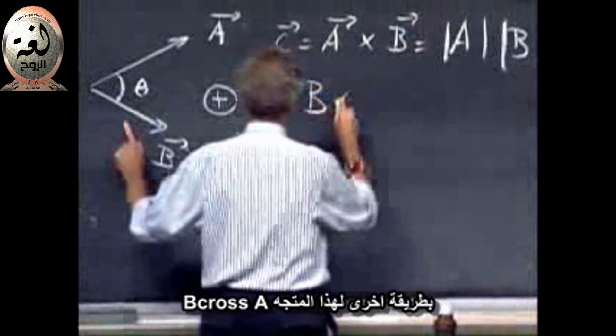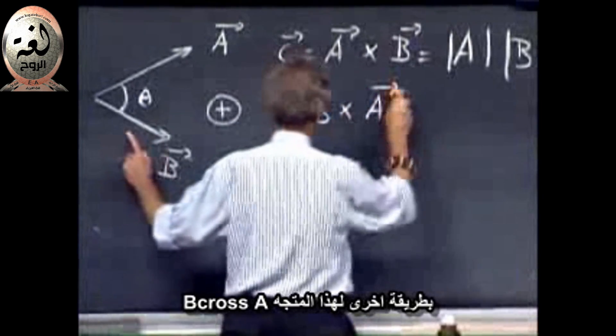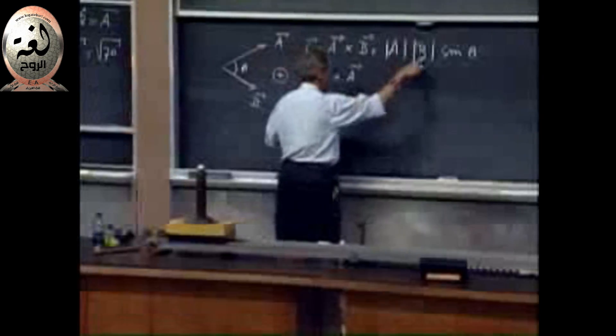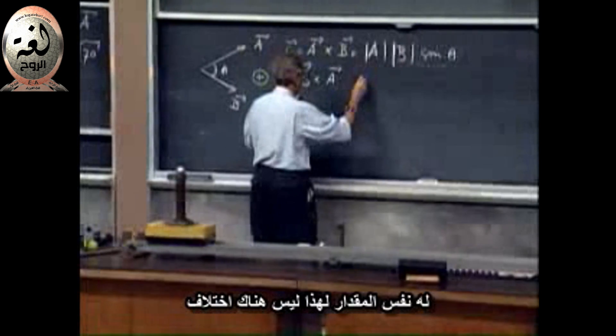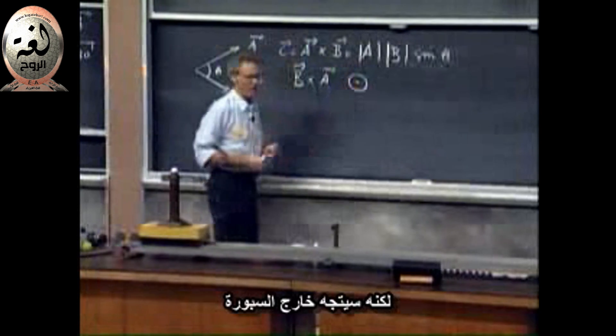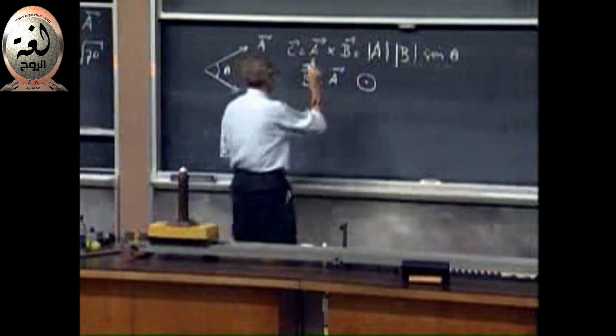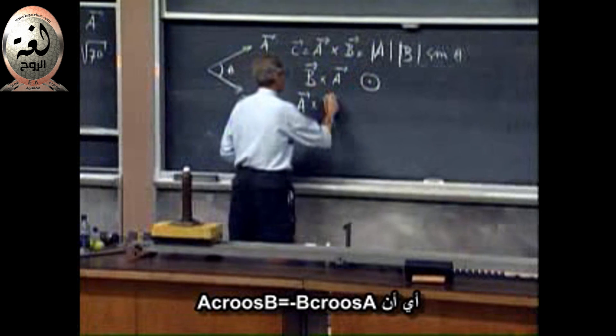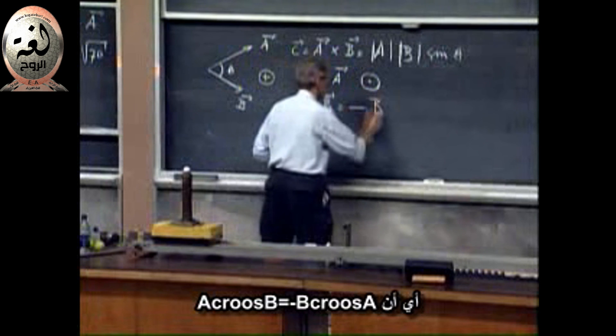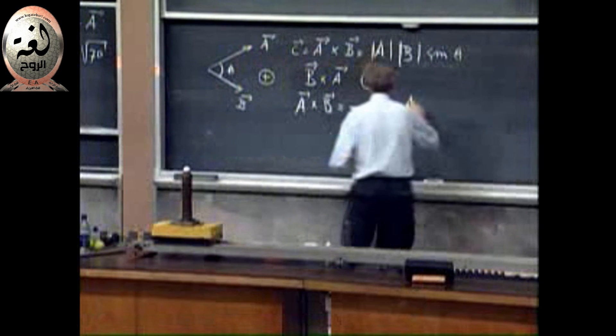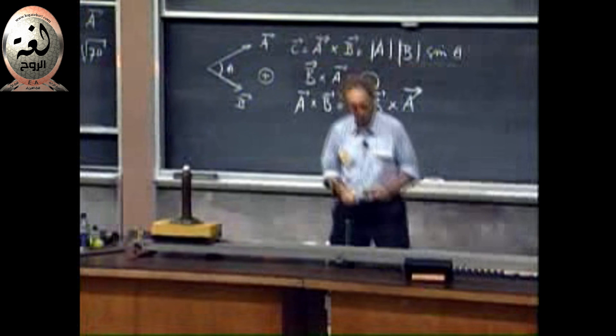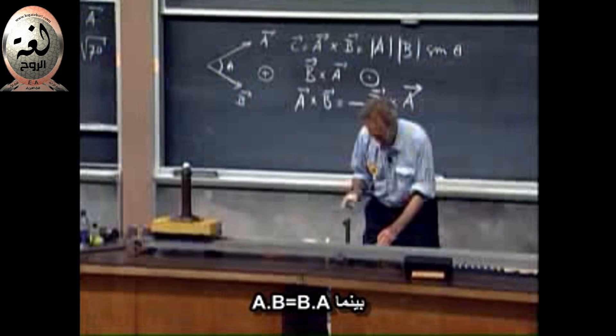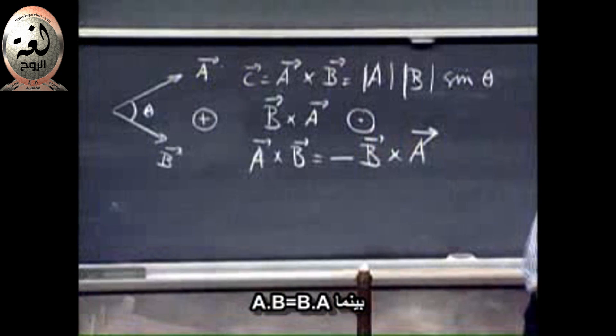In other words, for this vector, B cross A would have exactly the same magnitude, no difference, but it would be coming out of the blackboard. In other words, A cross B equals minus B cross A, whereas A dot B is the same as B dot A.